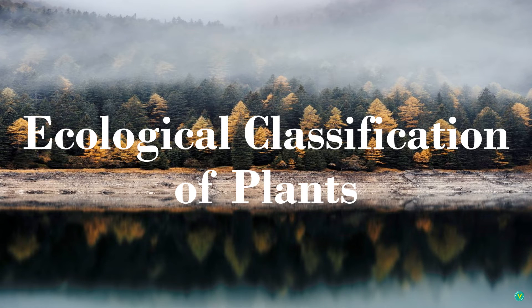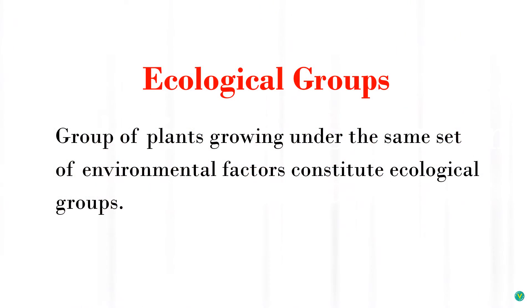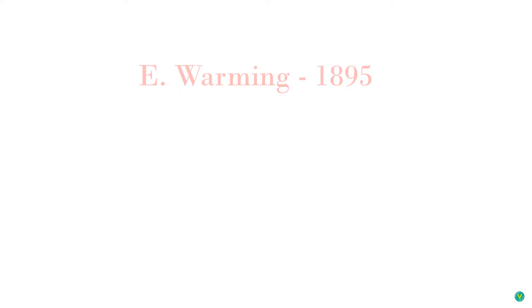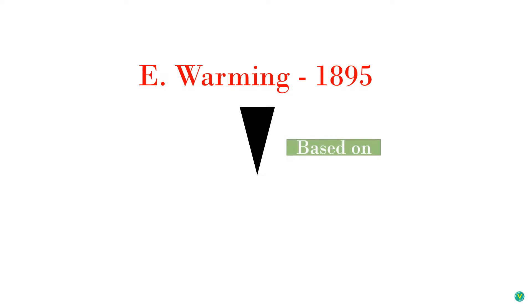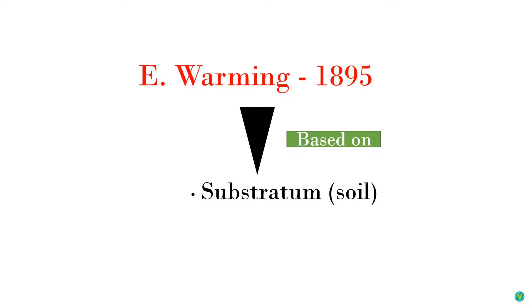Hello everyone, today we'll be discussing ecological classification of plants. Ecological groups or classification includes groups of plants growing under the same set of environmental factors. For example, some plants grow in hot regions while some grow only in cool climatic regions. Some plants are terrestrial, growing on land, while some are aquatic, growing in water. The ecological groupings were first made by Warming in 1895, based on substratum — that means soil — and edaphic factors.